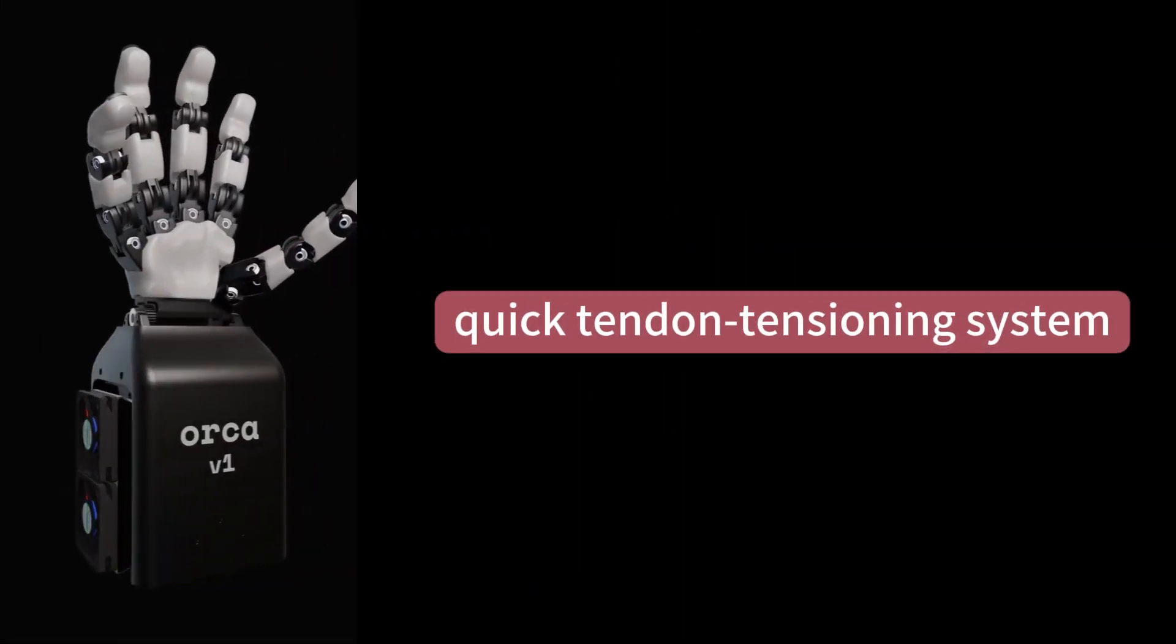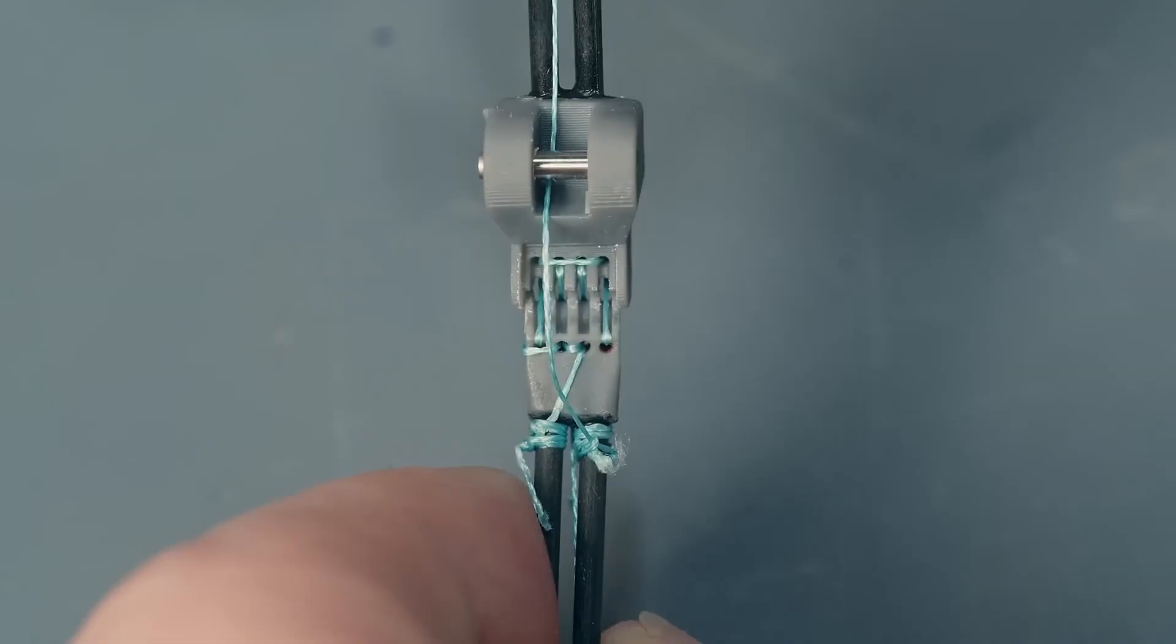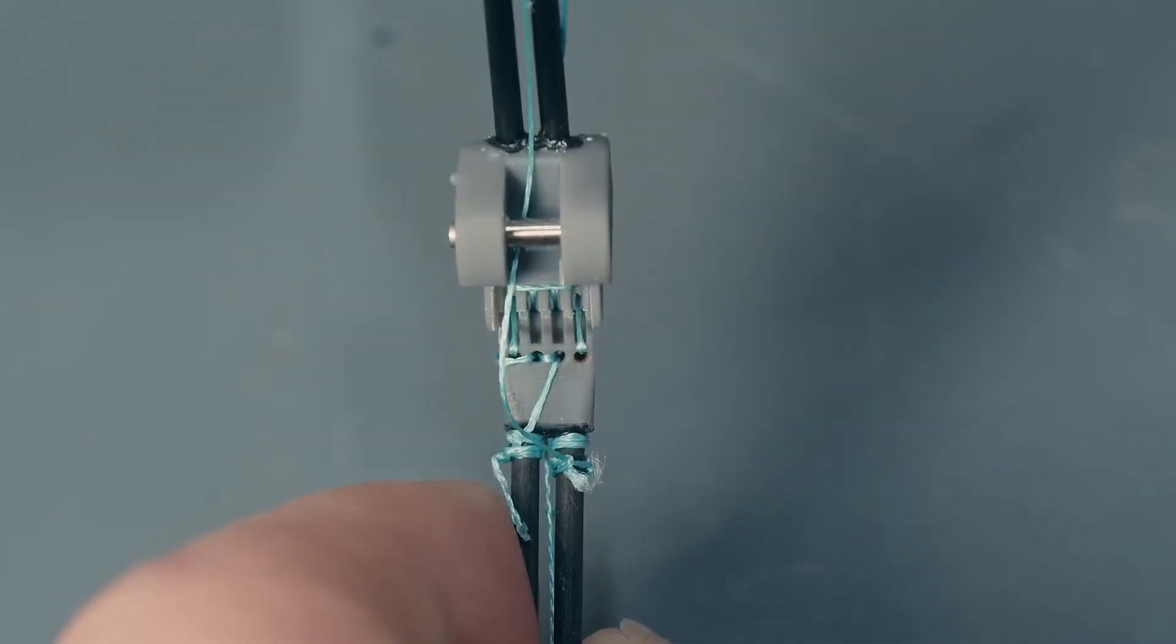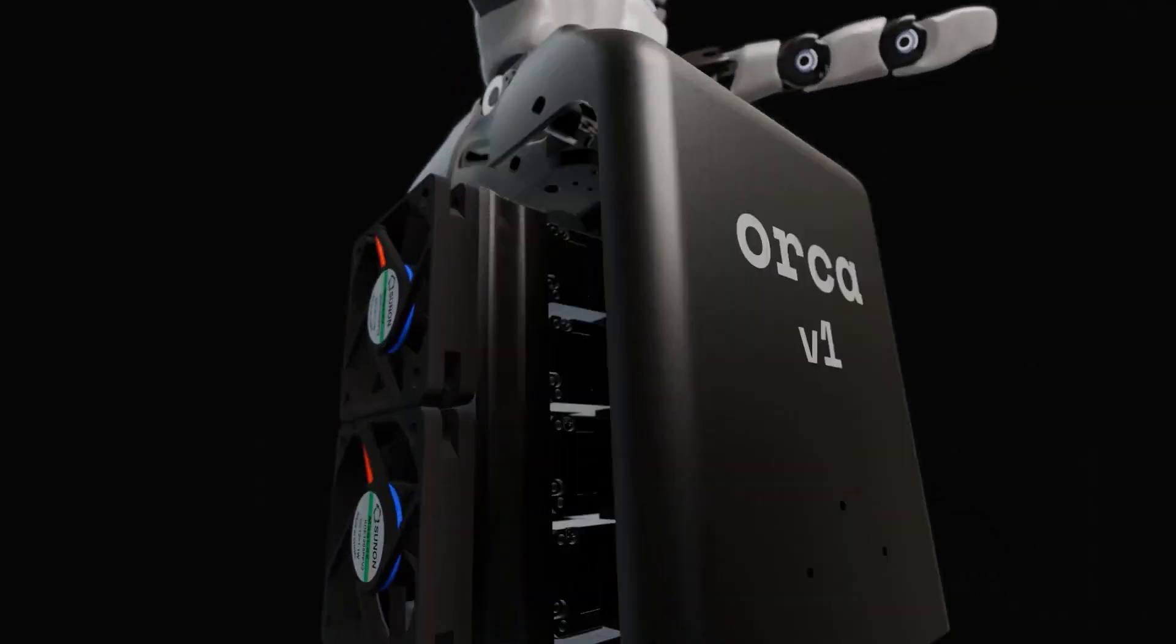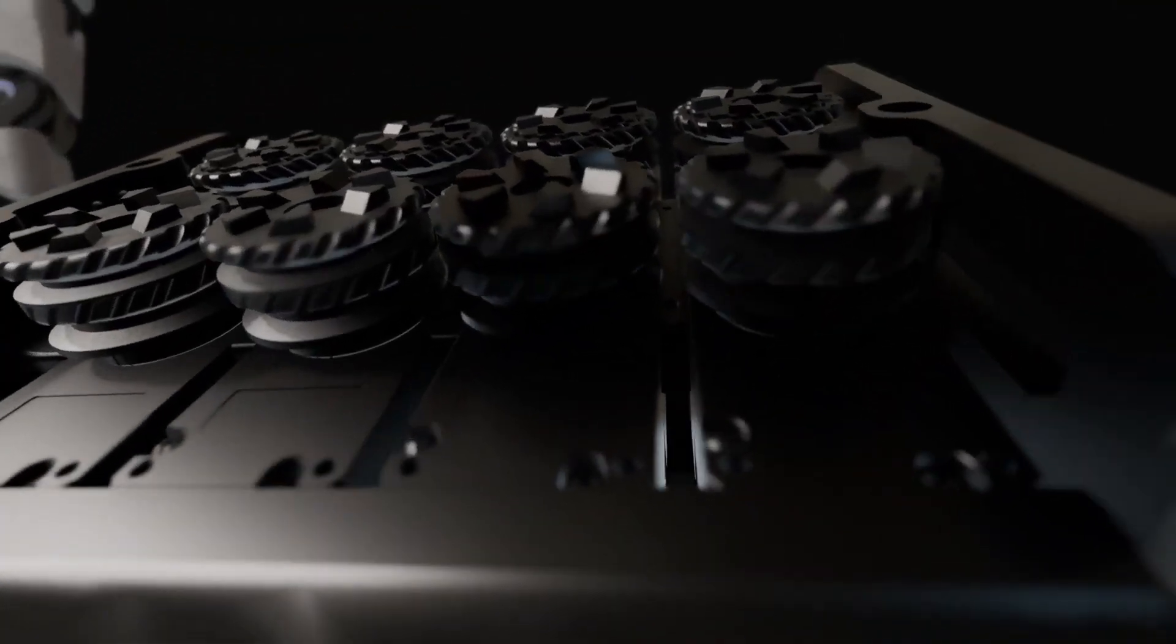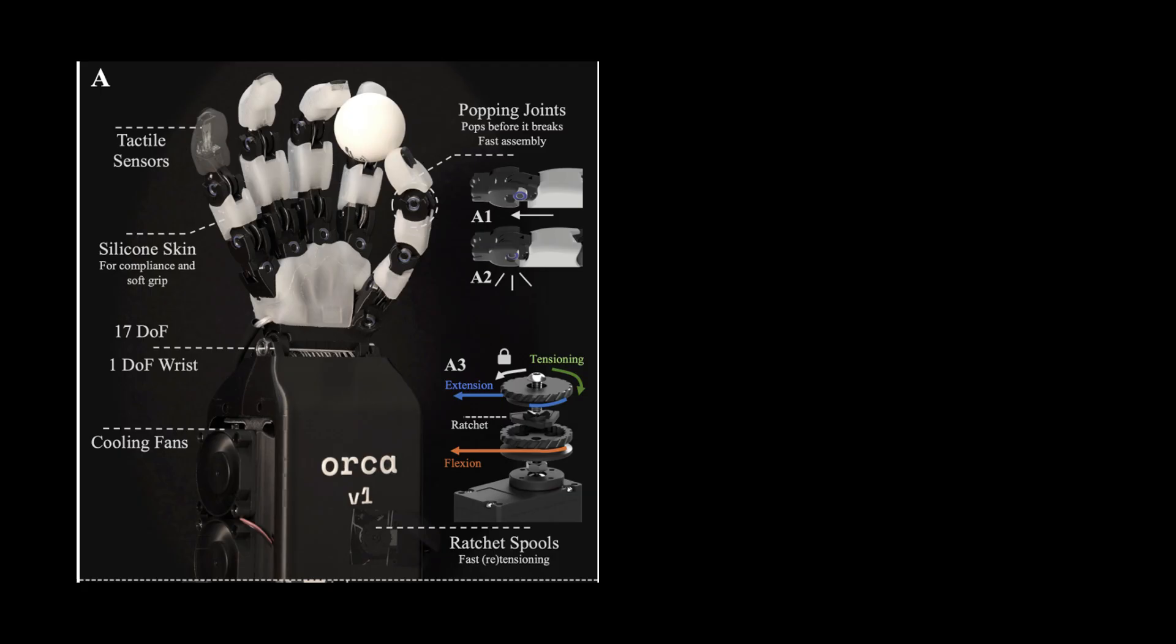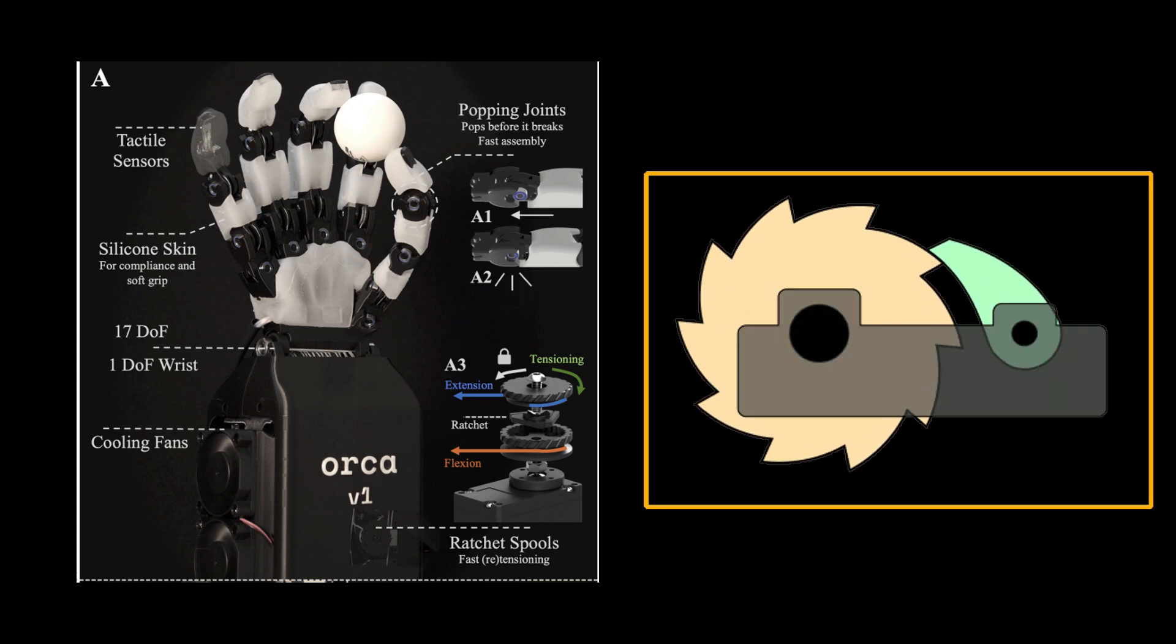The second trick is the quick tendon tensioning system. Tendon-driven hands inevitably suffer from slack over time, which degrades accuracy. The Orca hand addresses this by adding a compact ratchet mechanism at the motor. Without disassembling the system or rewinding tendons, you simply turn the ratchet, and within seconds, the tendons are re-tensioned, dramatically improving maintenance efficiency.